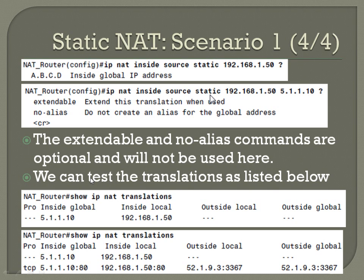We can test the translation. If you do a show IP NAT translations, you'll see the individual IPs mapped — inside global mapped to inside local. You'll also see any actual connections happening right then. It looks like someone is trying to use the web server: 5.1.1.10 receives a request to port 80 and forwards that to 192.168.1.50 port 80, and you can see the outside global and outside local addresses that correspond to that.